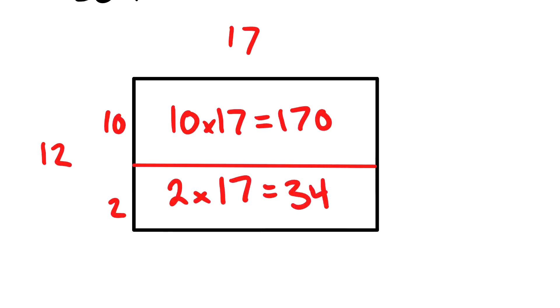And then I could say that the total area there is just those two things added together, so 204. That's the area method. Sometimes if you're more of a visual learner, that can really be useful.